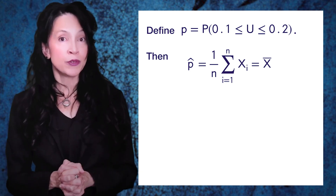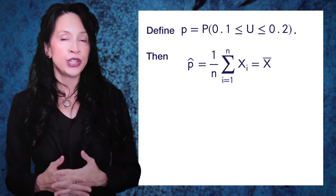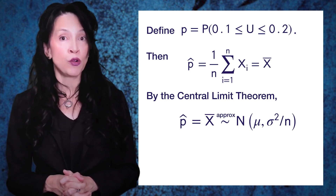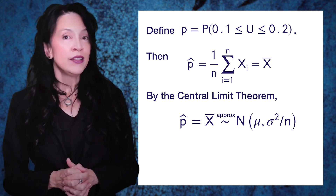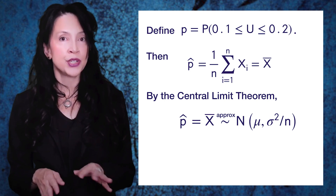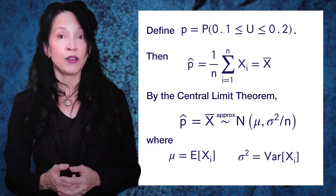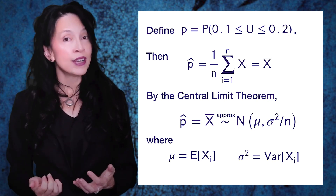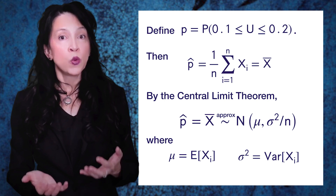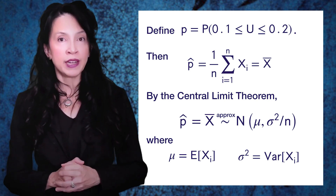And that means we can use the central limit theorem to talk about our estimator P-hat for p. By the central limit theorem, P-hat — which is X-bar — is approximately normally distributed with some mean mu and some variance sigma-squared over n. The mu here is the expected value of any one of the Xi, and sigma-squared is the variance of any one of the Xi, and n is the sample size. Because our Xi were Bernoulli random variables with p = 0.1, we can easily compute the mean and variance.